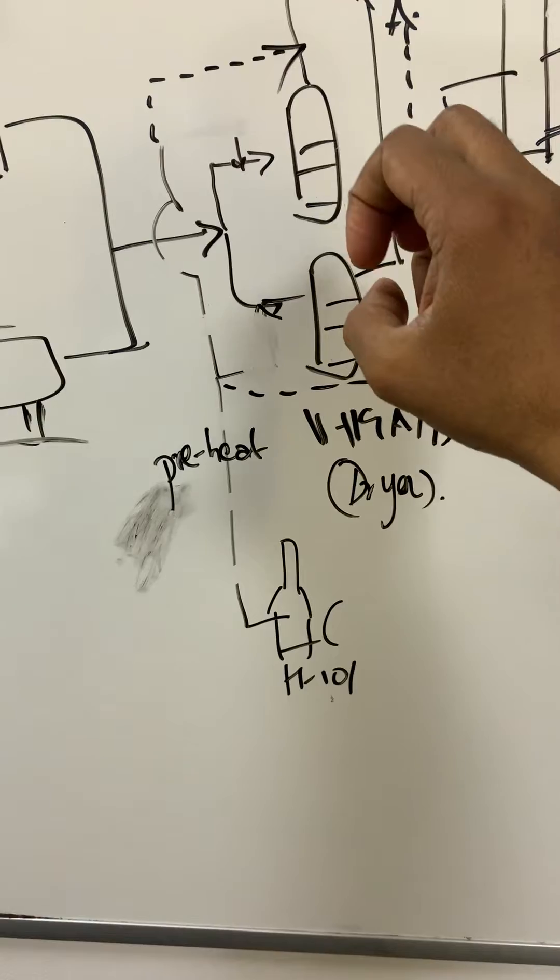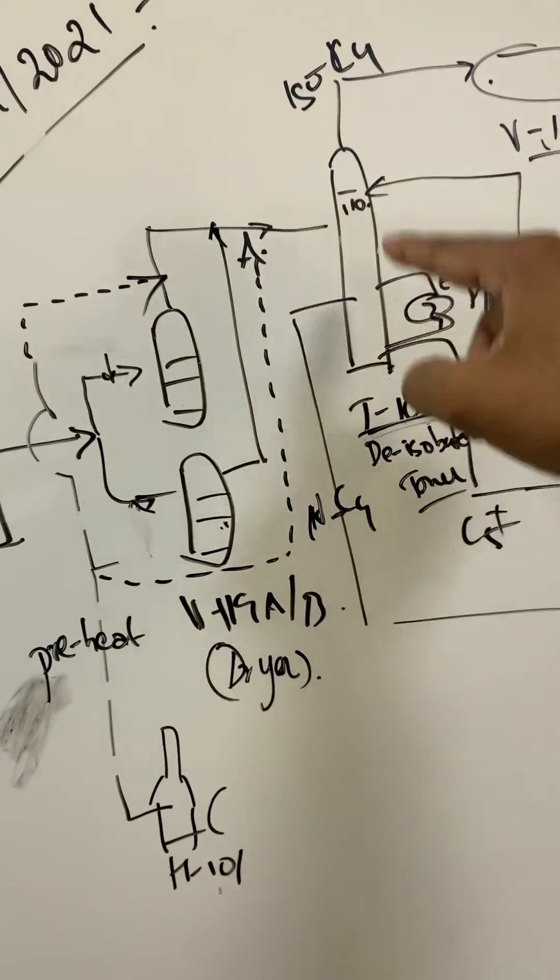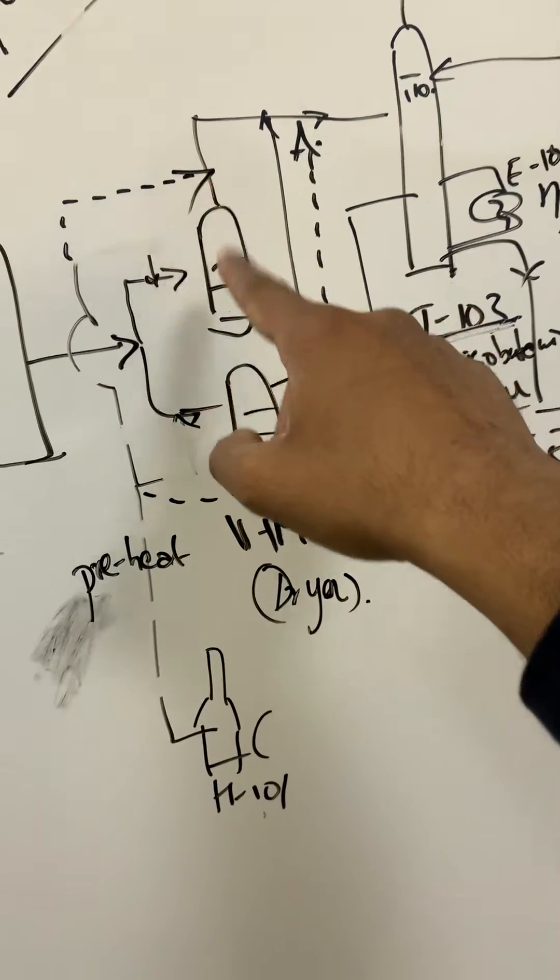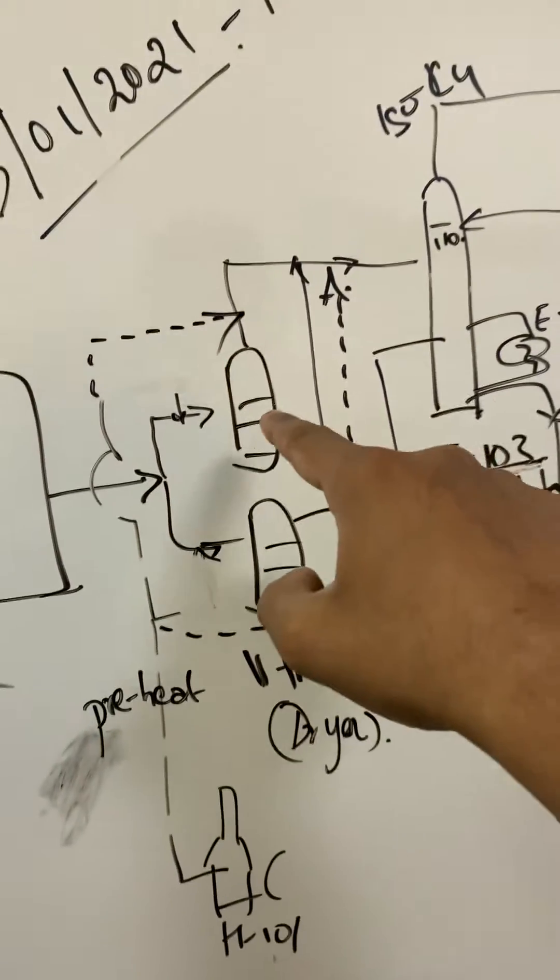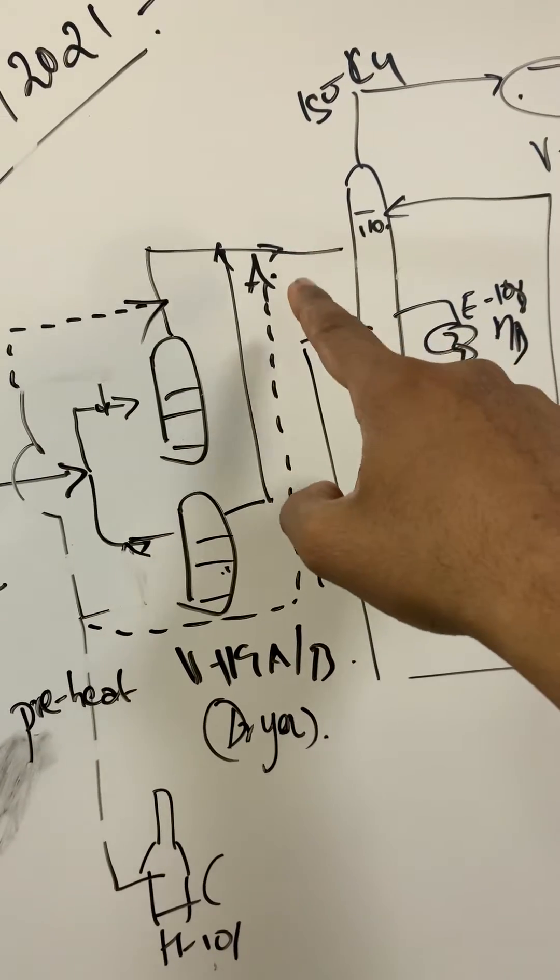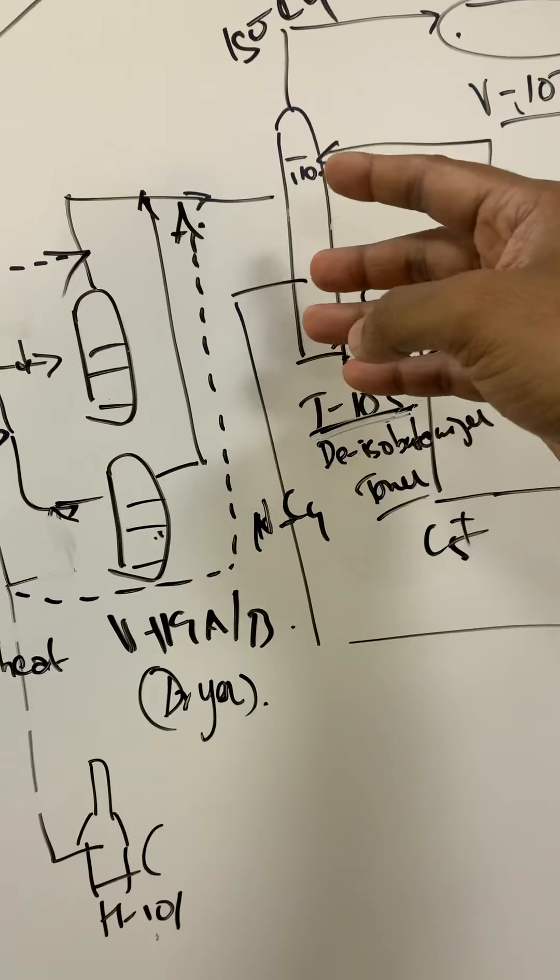Before going to the isomerization tower, it needs to be preheated, which H101 helps in the preheating. The preheated butane goes into the de-butanizer tower. Here it's kind of like a distillation or separation.